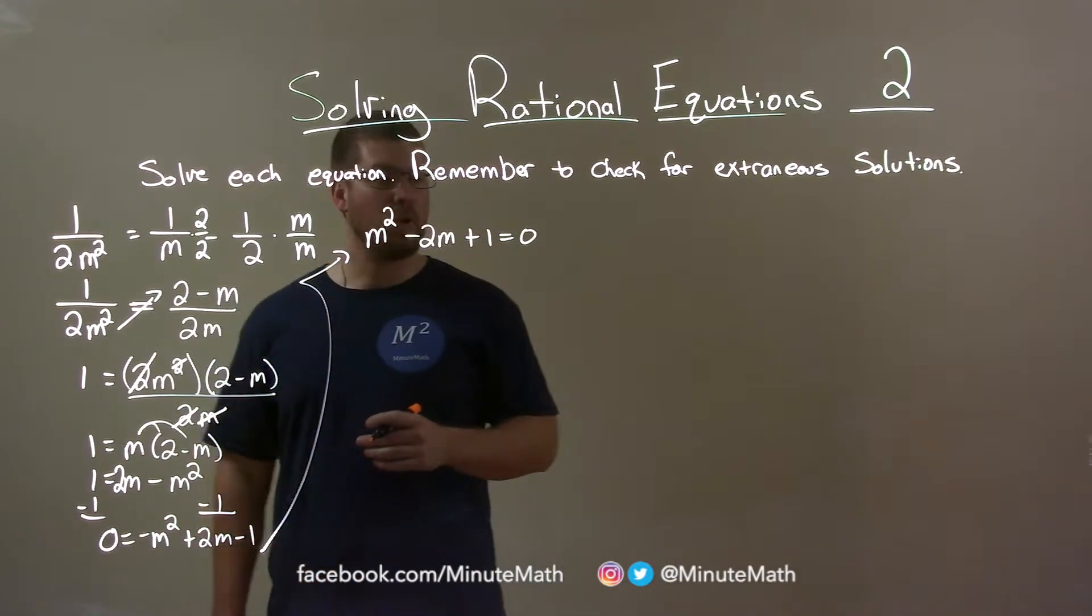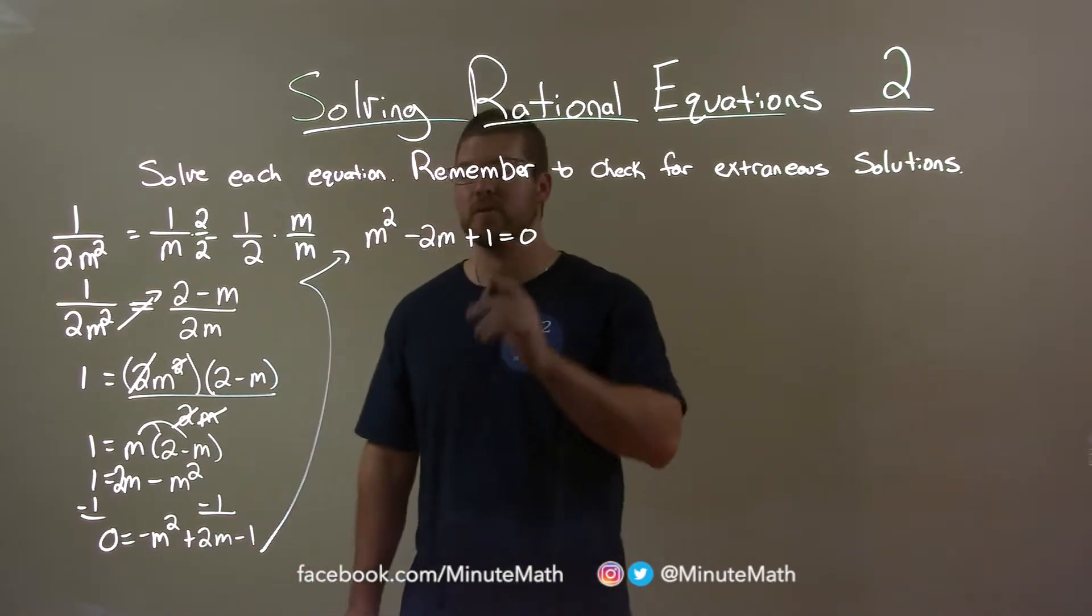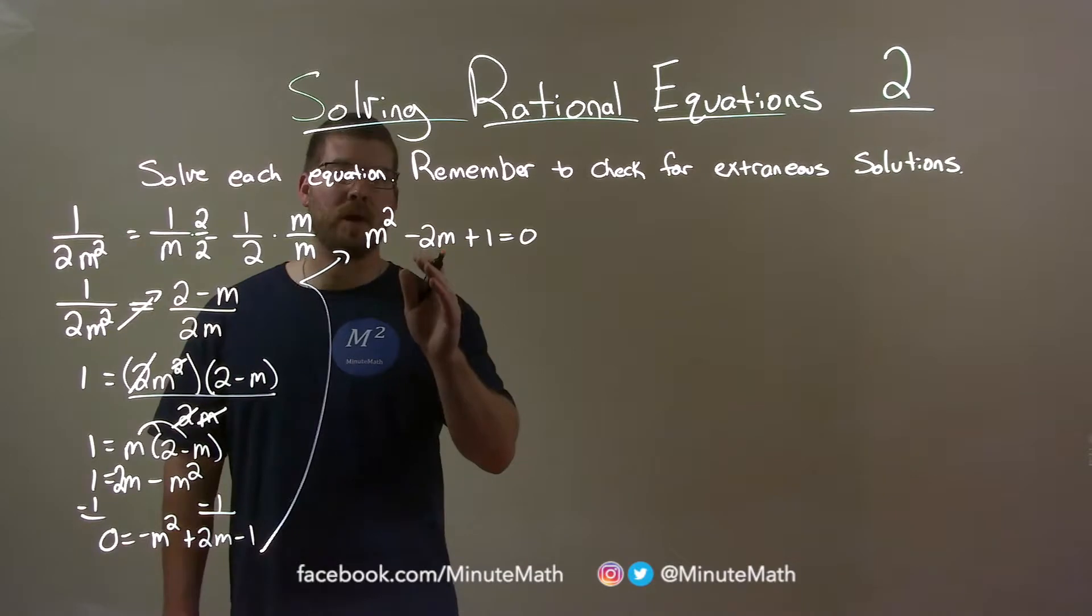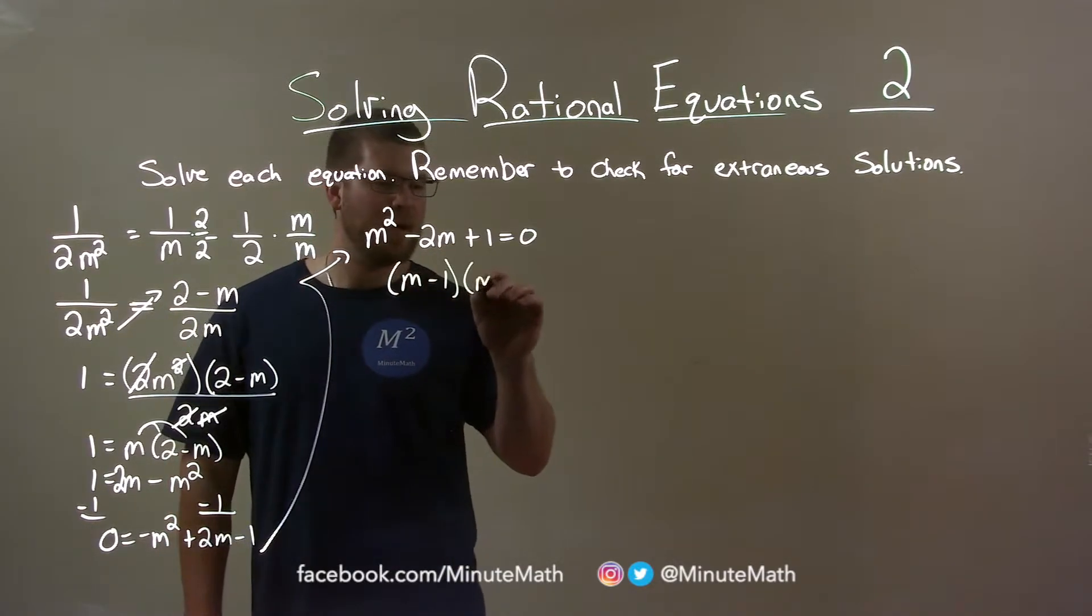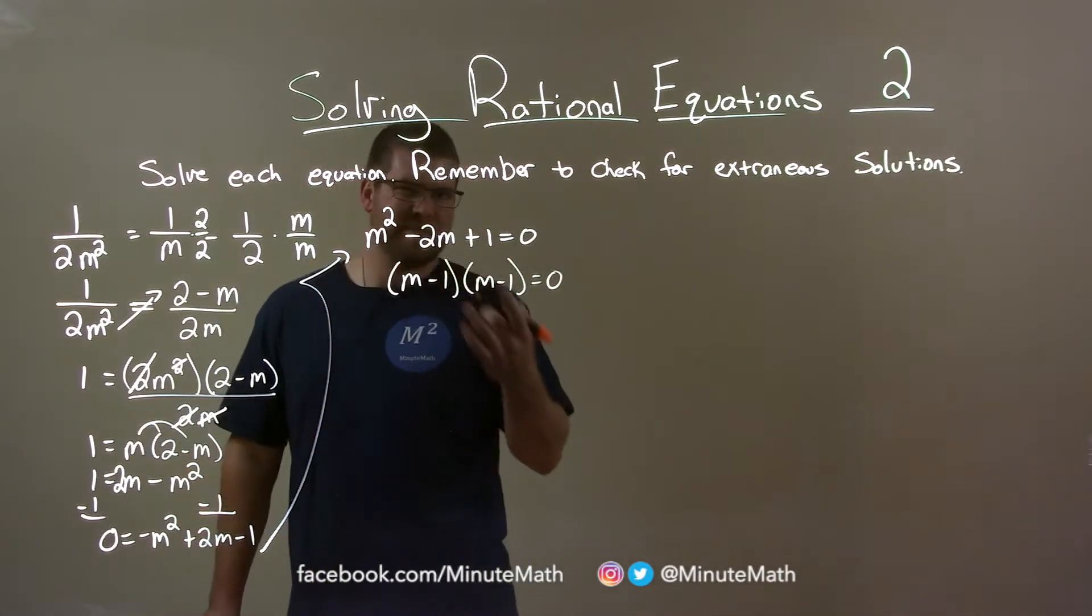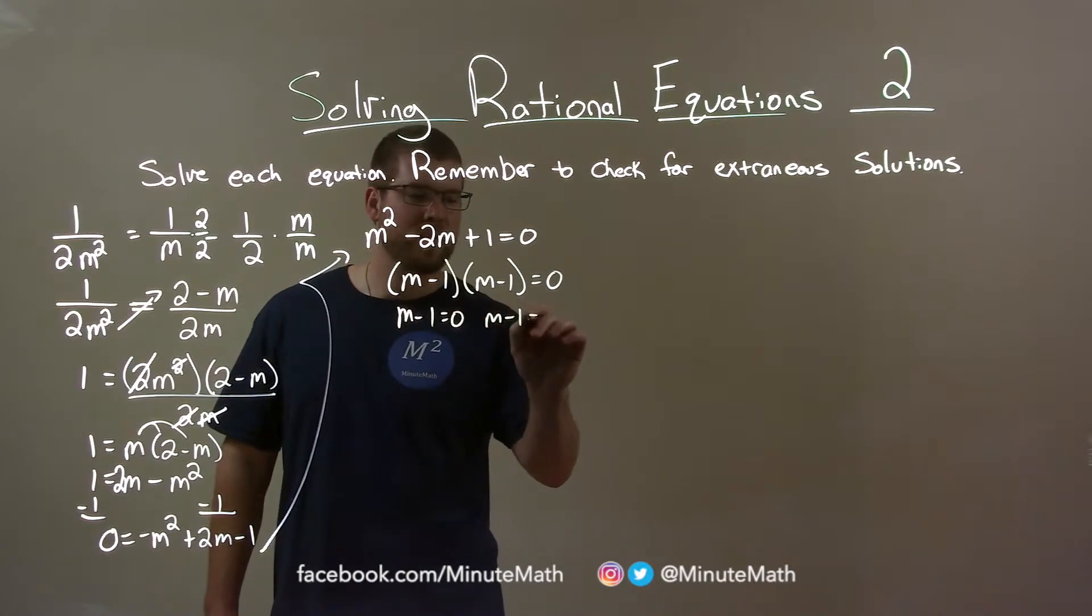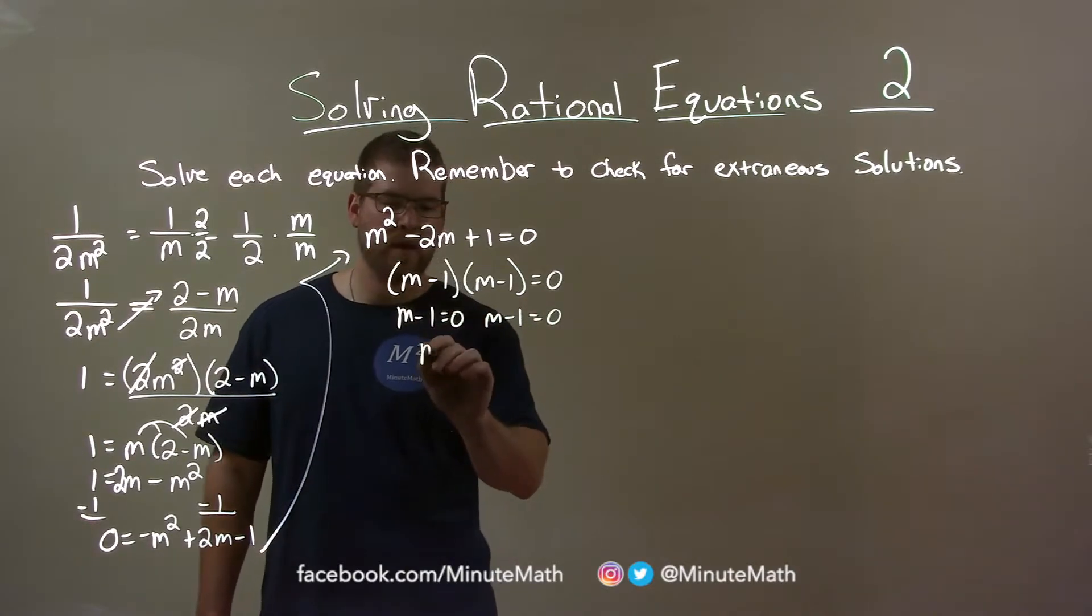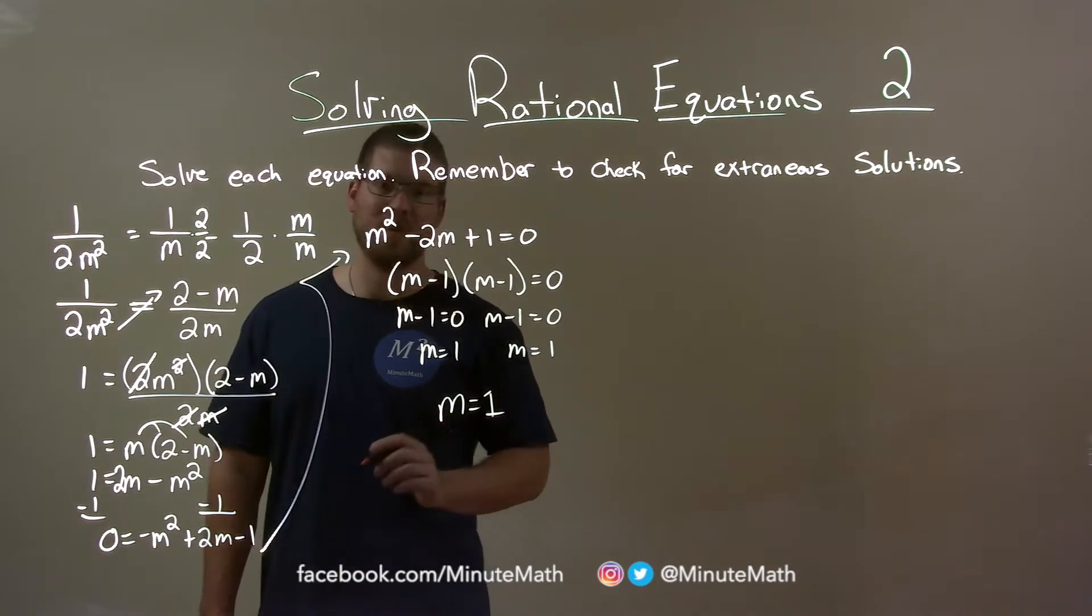Let's ask ourselves a question. What two numbers multiply to be a positive 1 but add to be a negative 2? And those two numbers are minus 1 and minus 1. So we have m minus 1 here, and m minus 1 is equal to 0. And so it's the same when we solve for m. We can set both of these equal to 0. m minus 1 equals 0. It's the same thing. m equals positive 1 for both of them. And we only need to write that once. m equals positive 1.